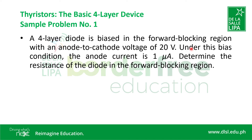For problem number one, a four-layer diode is biased in the forward blocking region with an anode to cathode voltage of 20 volts. Under this biased condition, the anode current is 1 microampere. Determine the resistance of the diode in the forward blocking region.